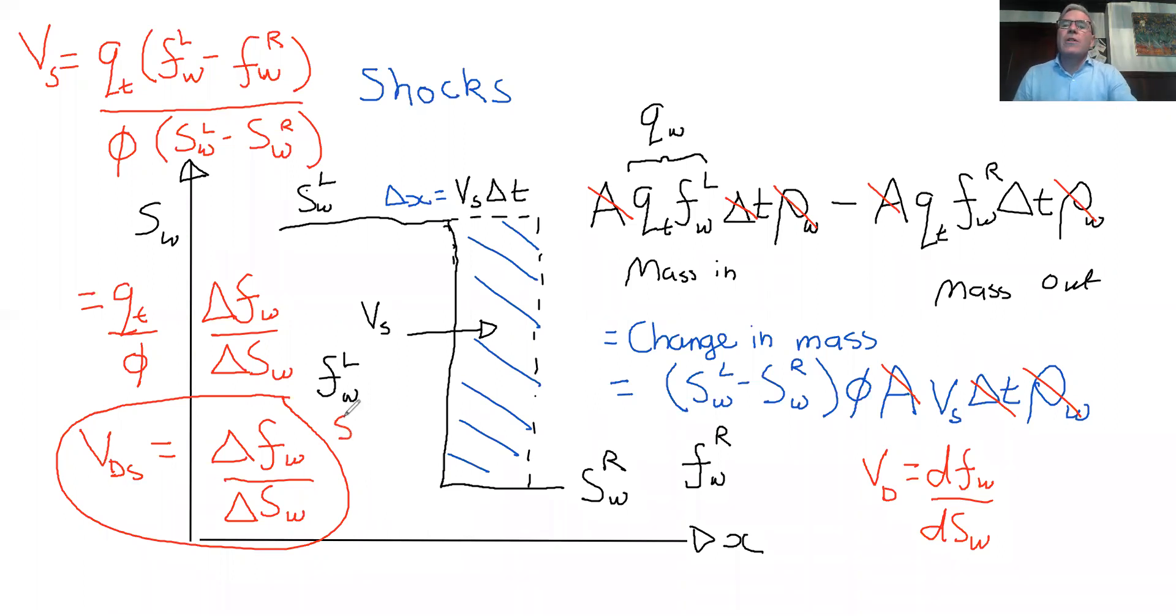So this is called a shock. And this, as we've said before, is a rarefaction. And we also know that a constant saturation is also a solution. So the last thing I want to say is, well, this is a discontinuity and it does represent, if you think of the large scale, it's a rock.